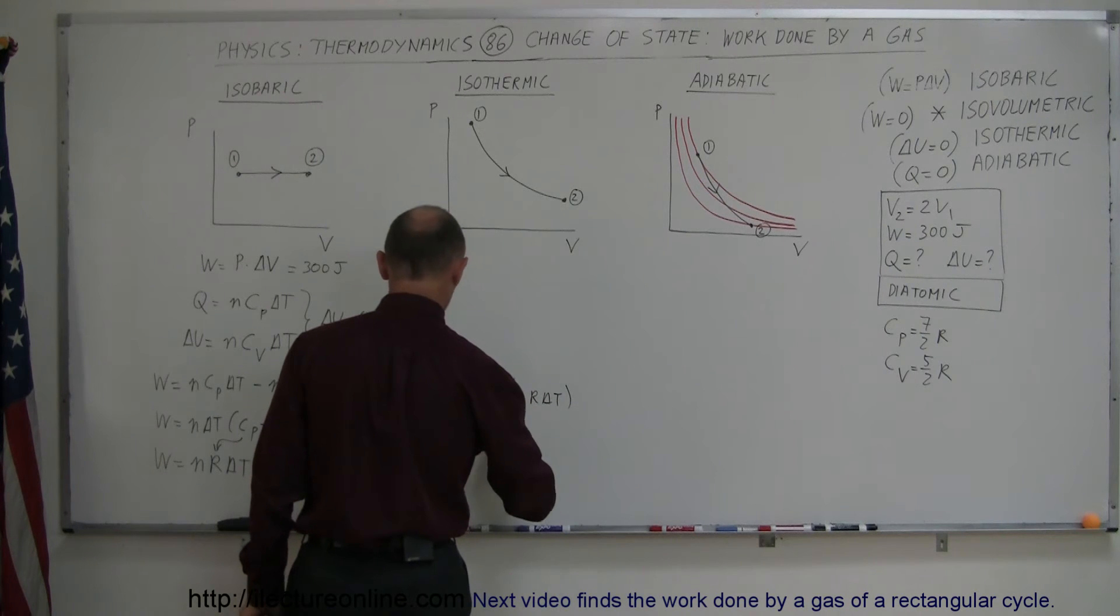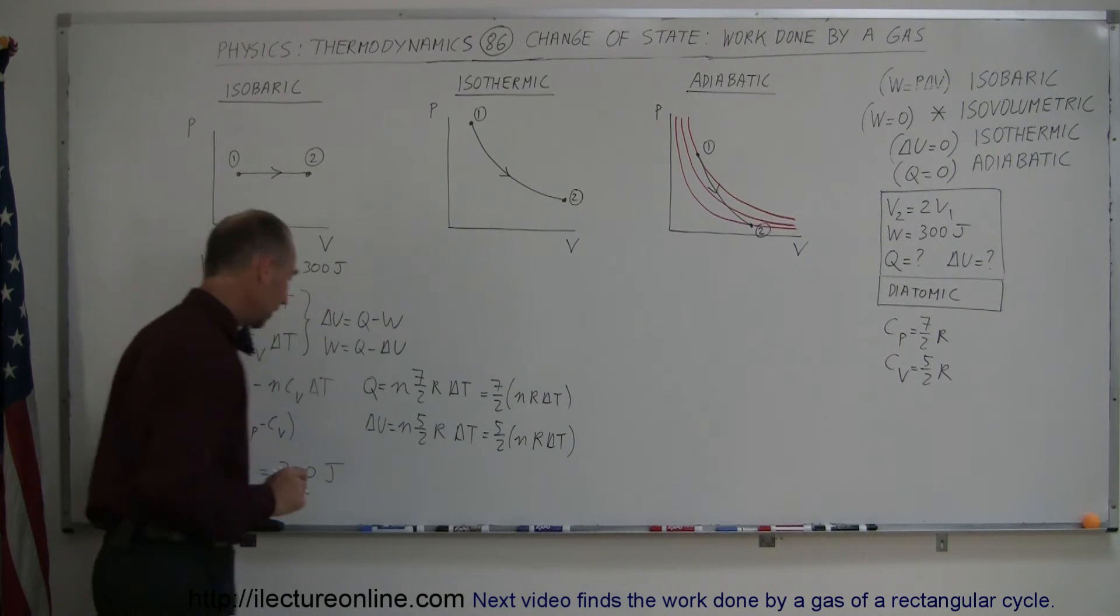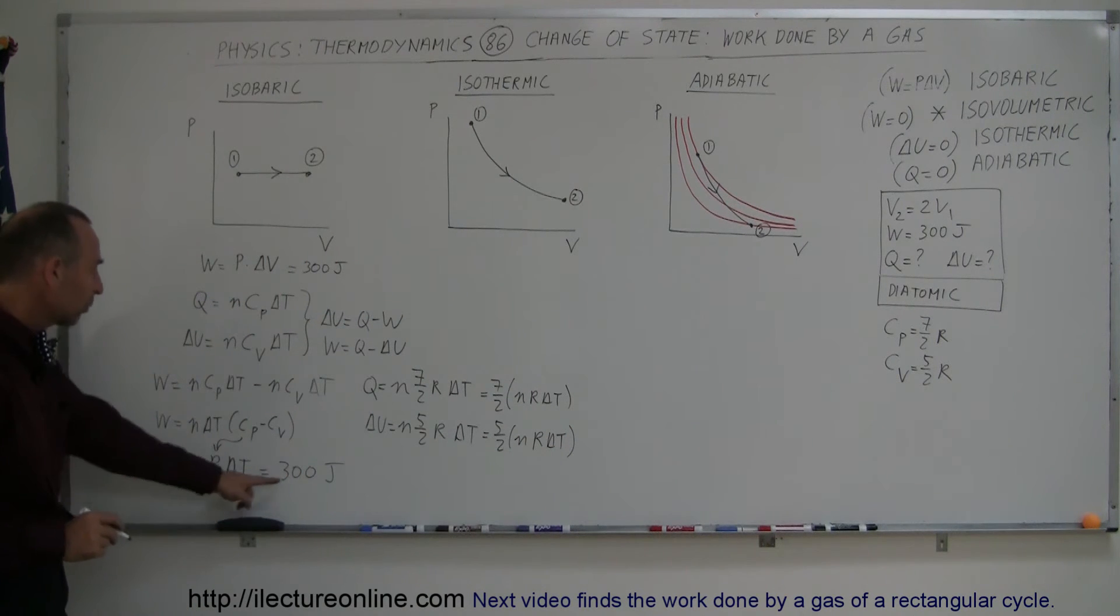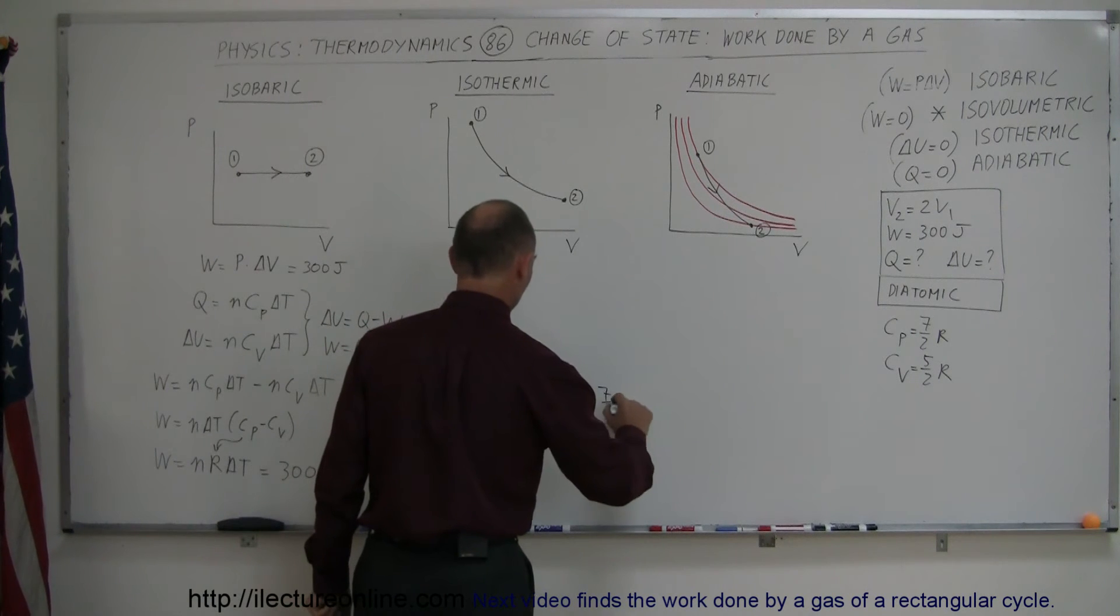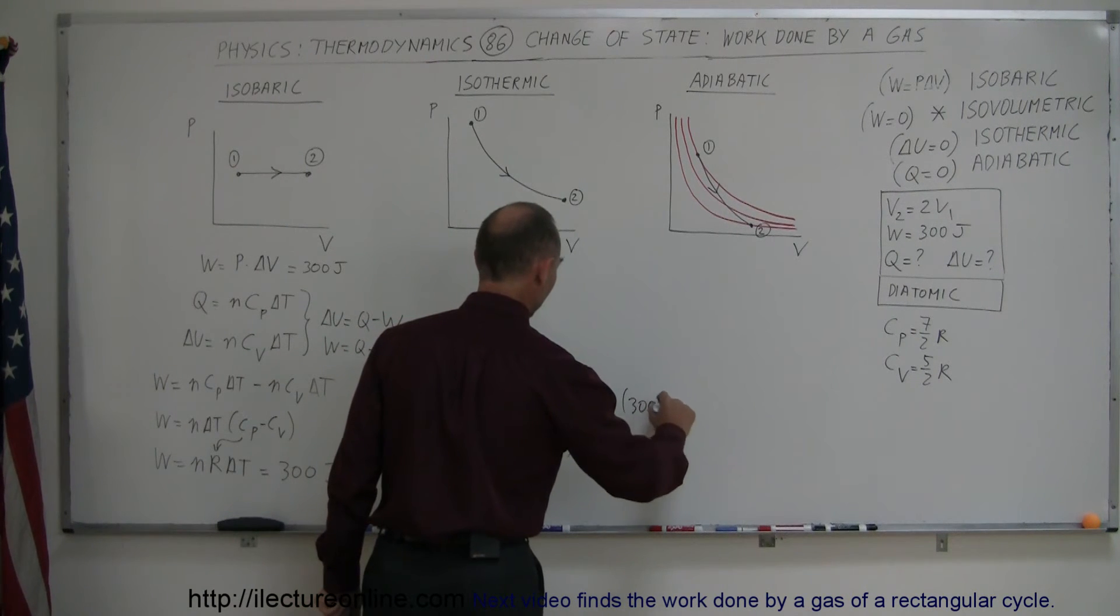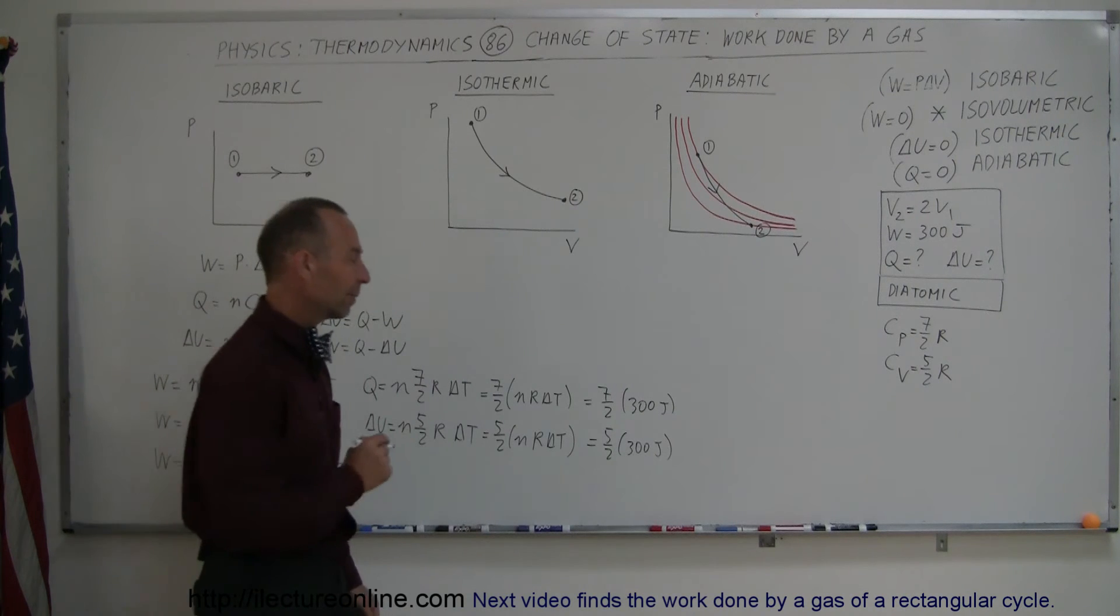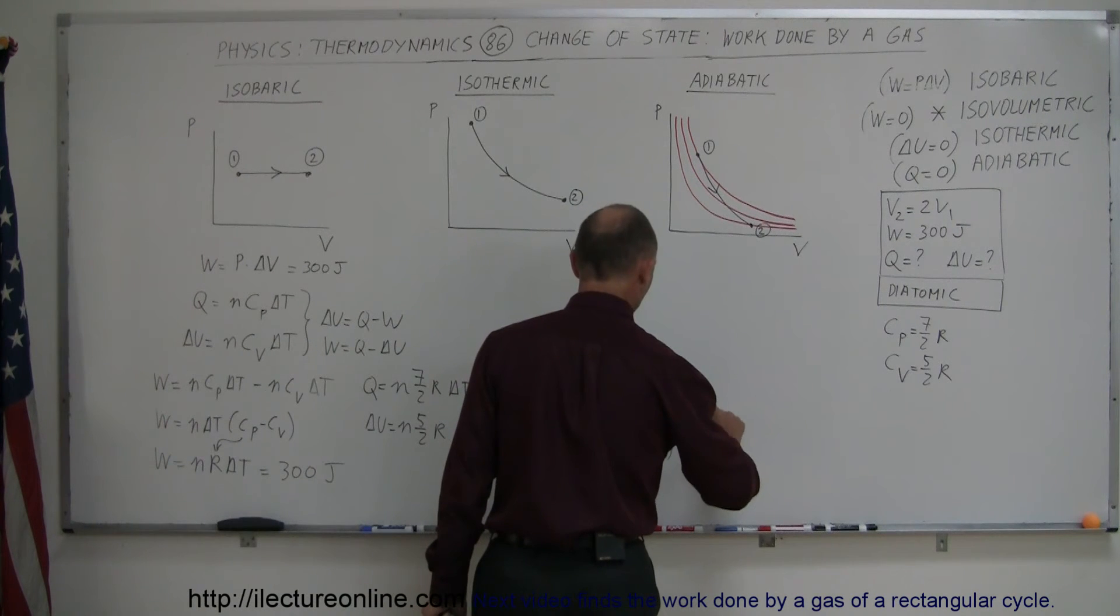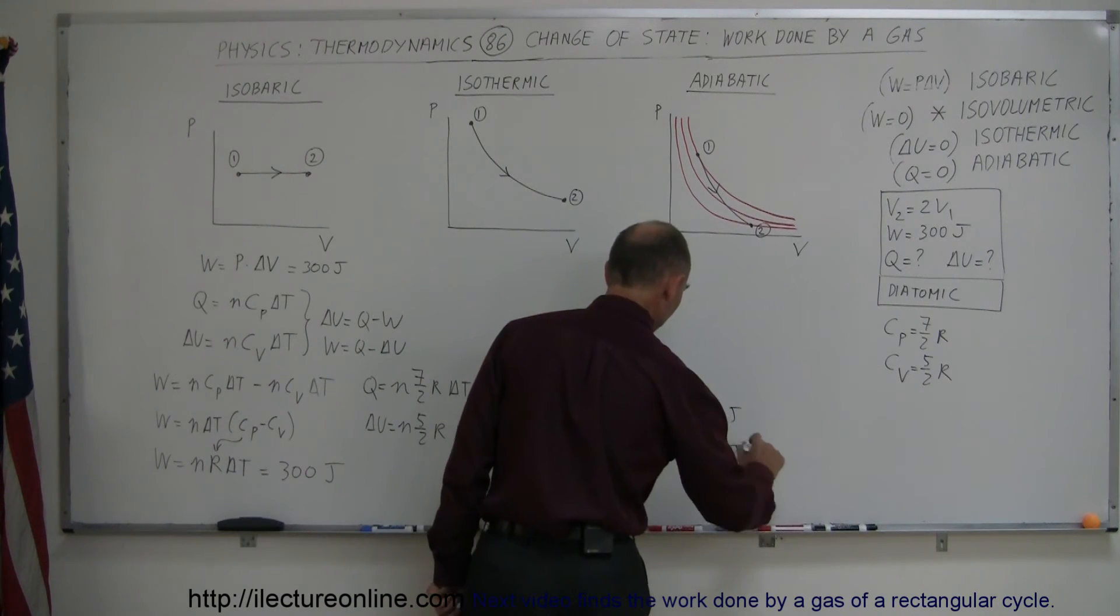And delta U is equal to N times 5 over 2 R times delta T. And as we discovered, N R delta T is equal to the work done, which is equal to 300 joules. So this is equal to 7 over 2 times 300 joules, and this would be equal to 5 over 2 times 300 joules. And so 7 times 3 is 21 divided by 2 is 1050 joules, and this would be 1500 divided by 2, or 750 joules.